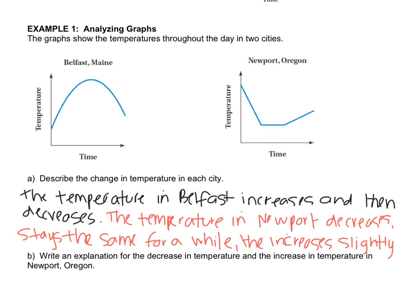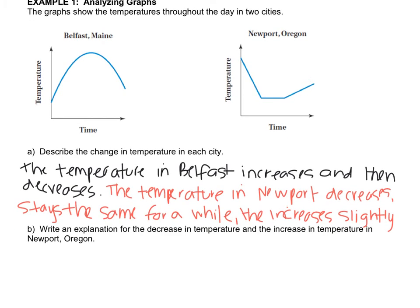In letter B, they want us to write an explanation for why it went down and then went back up. Like I mentioned, it doesn't necessarily mean that it has to be over the period of one day. It just says time. It could be years. It could be centuries. One reason that I'm thinking of is that this is talking about over several months.